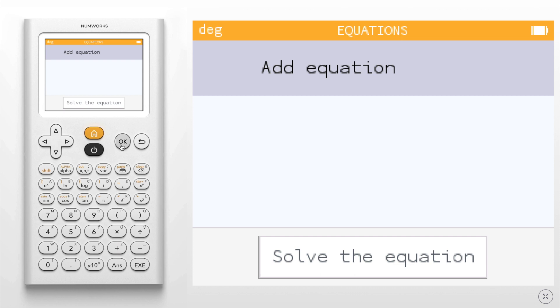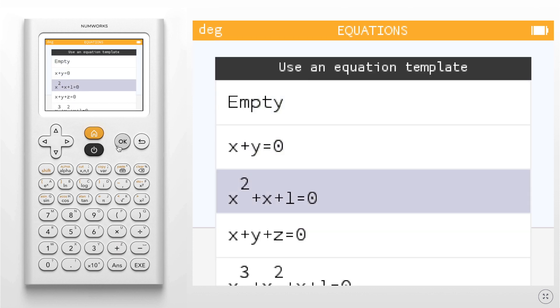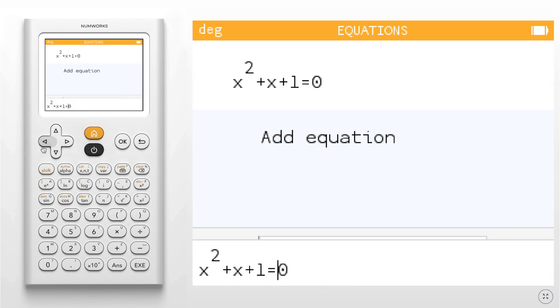First we're going to add an equation, choose the quadratic template, and fill in our template. So I'm going to do 5x² + 2x - 2 = 0.